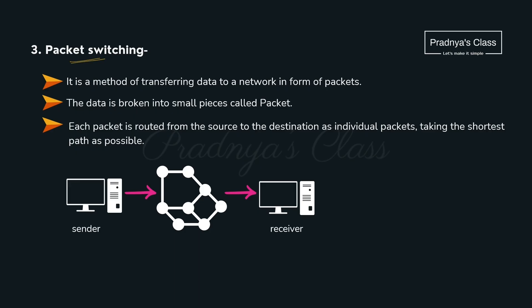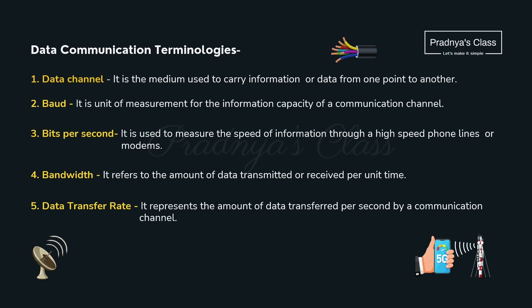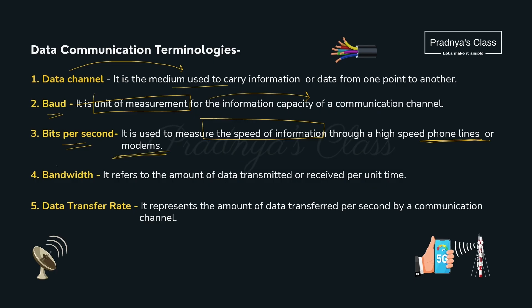In packet switching, the information also goes to the switching office, but it is broken down into smaller packets. The packets take the smallest route and then reach the destination. Now let's talk about data communication terminologies. A data channel is a medium through which we carry information. Baud is the unit to measure the information capacity of a communication channel. Bandwidth refers to the amount of data transmitted or received per unit time. Data transfer rate is the amount of data transferred per second.